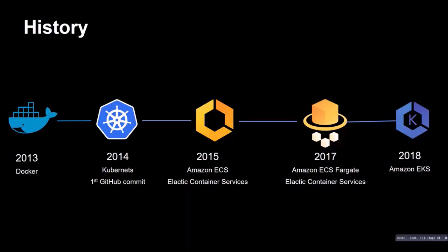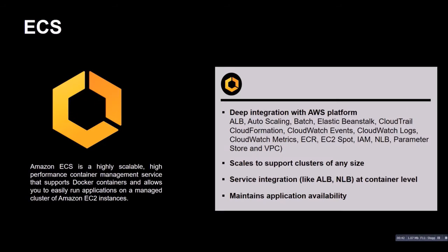Hello AWS friends. In this tutorial let's have a look at AWS Fargate. I already have some videos on my YouTube channel about ECS — one explaining ECS and another explaining a CodePipeline for ECS. I also have videos about Kubernetes with kops and EKS, but not yet on Fargate. Fargate was launched in late 2017 as the next evolution step to ECS — a highly scalable, high-performance container management service that supports Docker containers.